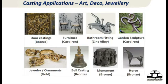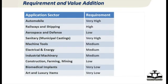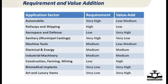So you see the variety of metals, variety of shapes, and variety of applications that castings cater to. But if you look at value addition and requirement, the automobile industry has very high volume requirement, whereas art and decorative items have low total weight but potentially higher value addition — it's kind of the opposite.